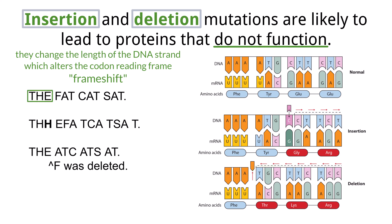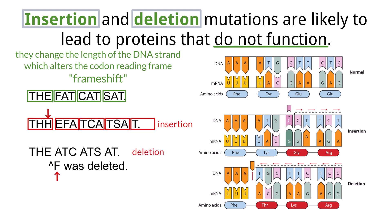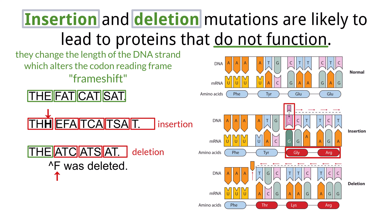Take this sentence for example: 'The fat cat sat.' If we insert an extra letter into this sentence, the way we read these three-letter words is completely altered: T-H-H-E-F-A-T-C-A-T-S-A-T. The sentence is no longer recognizable. The same is true when looking at DNA sequences — when a cytosine is inserted into the sequence, the amino acid coded by this sequence changes from glutamic acid to glycine and arginine.